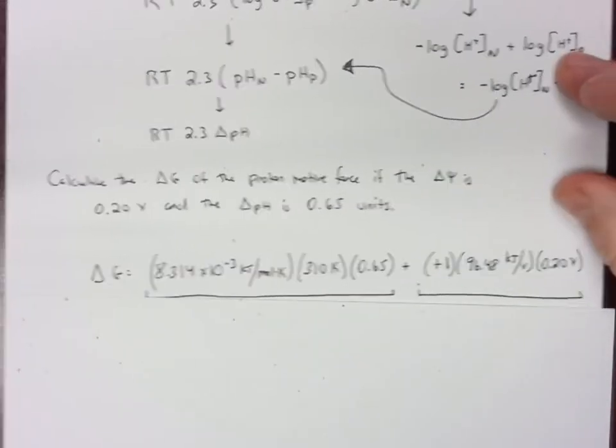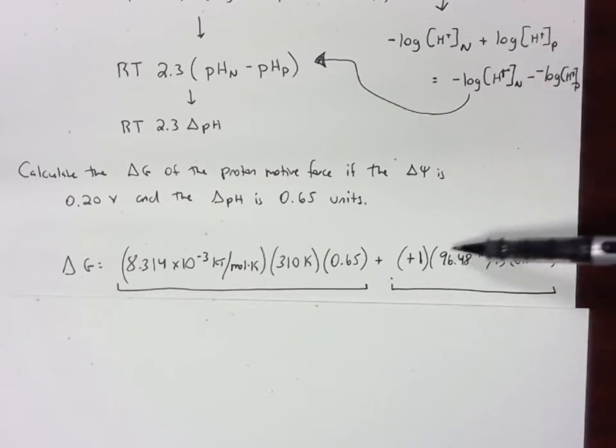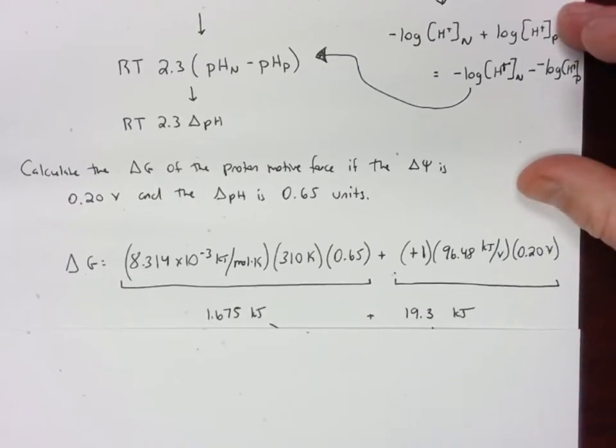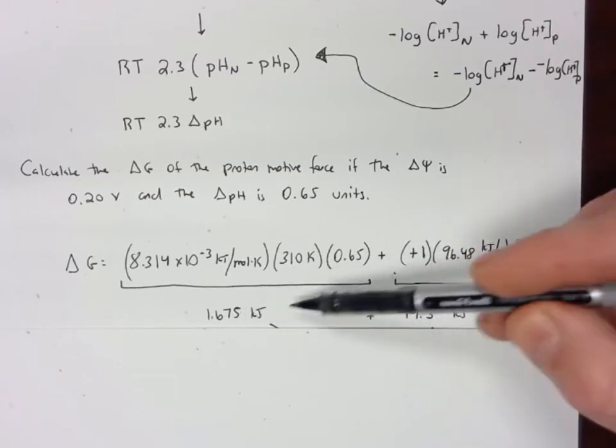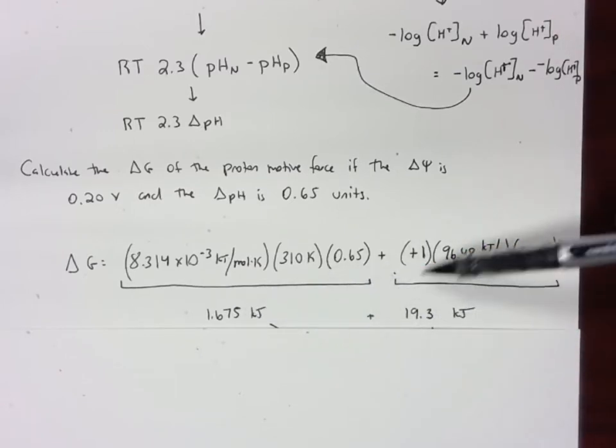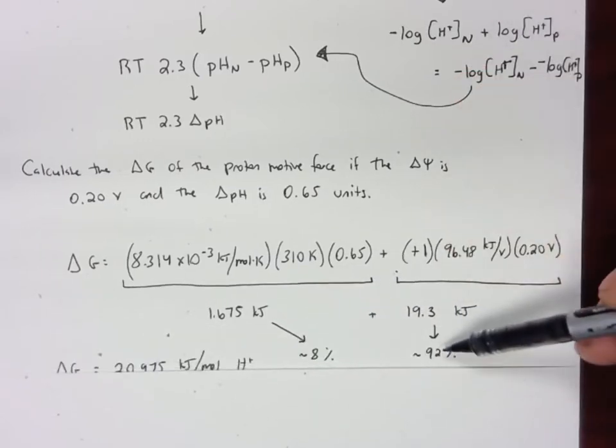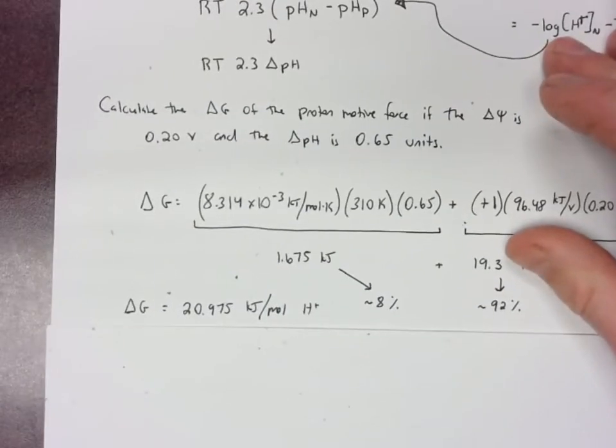We have the charge of the proton, Faraday's constant, and then the voltage difference across the membrane. When I do this I actually see that most of the energy in the proton motive force comes from the electrical potential, not from the chemical potential—92 percent in fact, because the total is 20.975 kilojoules per mole of H⁺.